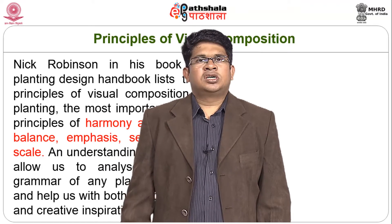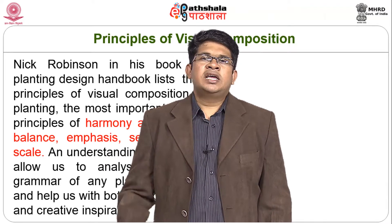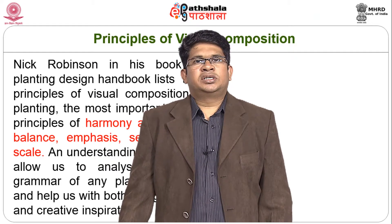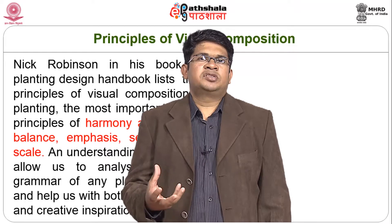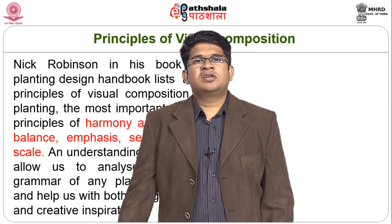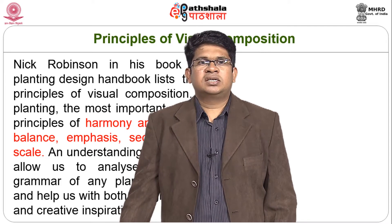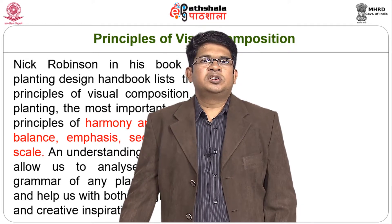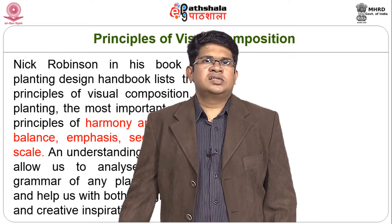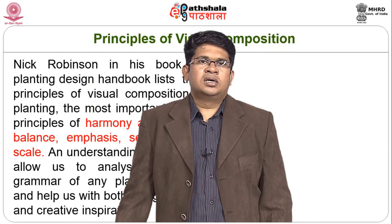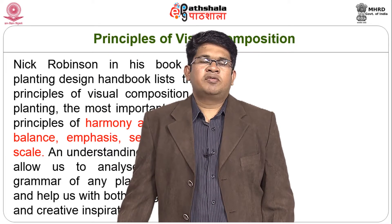Nick Robinson, in his book Planting Design Handbook, writes about five different principles that talk about how we achieve these in planting design. He lists them as: harmony and contrast, balance, emphasis, sequence, and scale. These are the important principles with respect to planting design so that the visual character of a particular planting design is brought out very effectively.